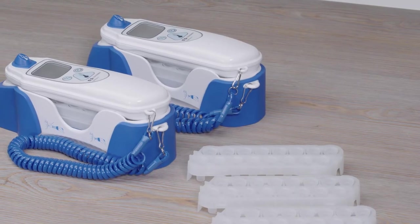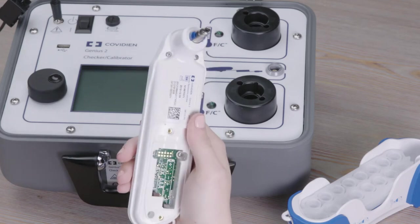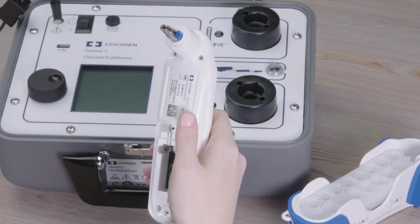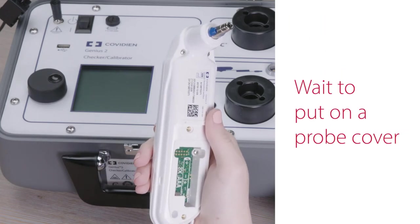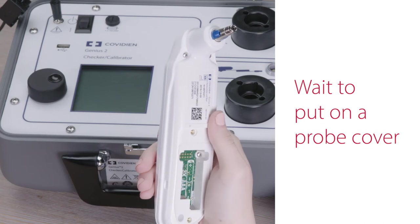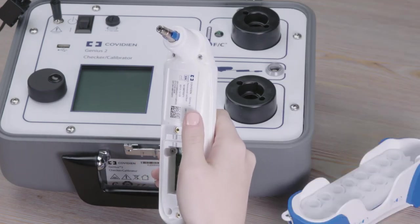Next, gather all the Genius thermometers that you will be calibrating. Inspect each thermometer to ensure it's in good condition, free of debris, cracks, or other damage. Do not put on a probe cover at this stage. If the lens needs cleaning, please do so before calibrating the thermometer. Consult your thermometer's IFU for detailed cleaning instructions.